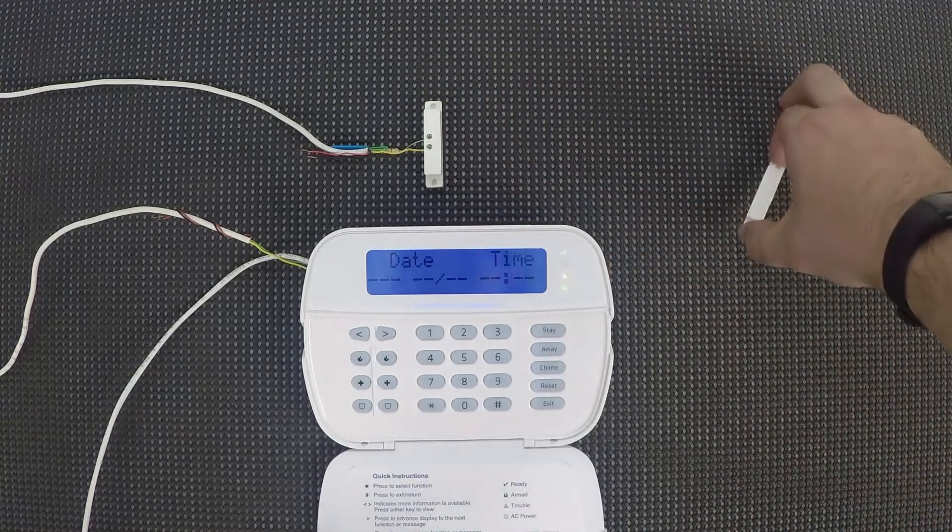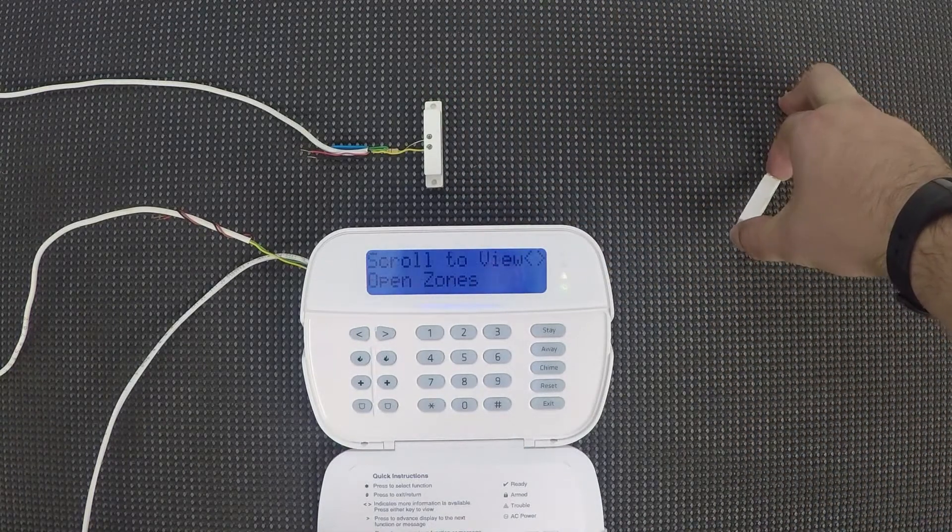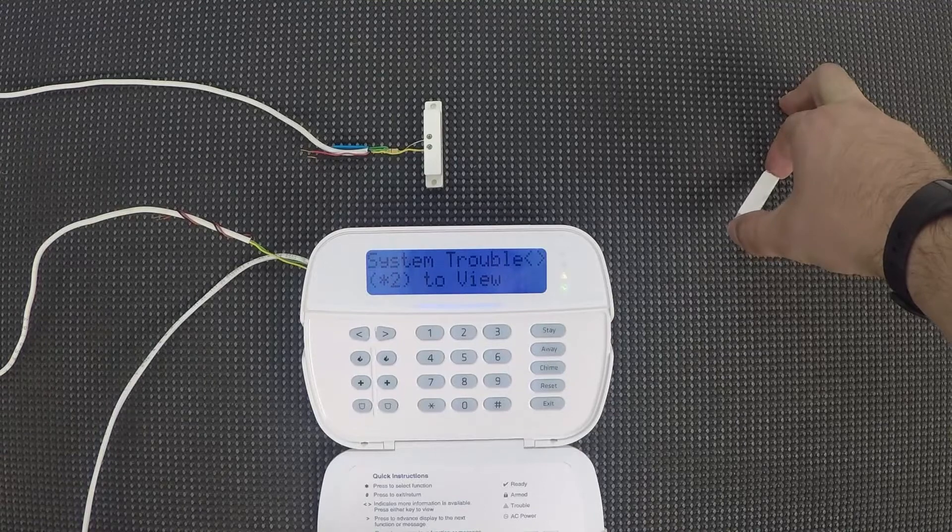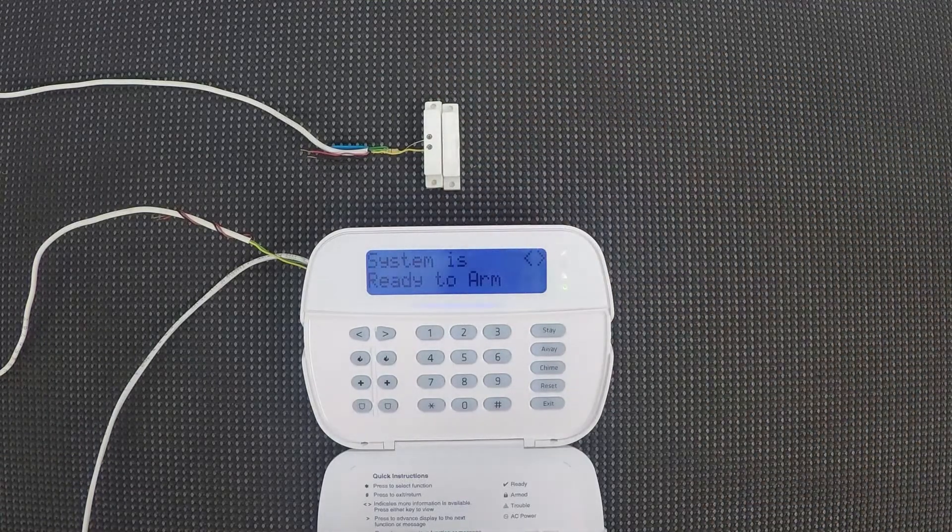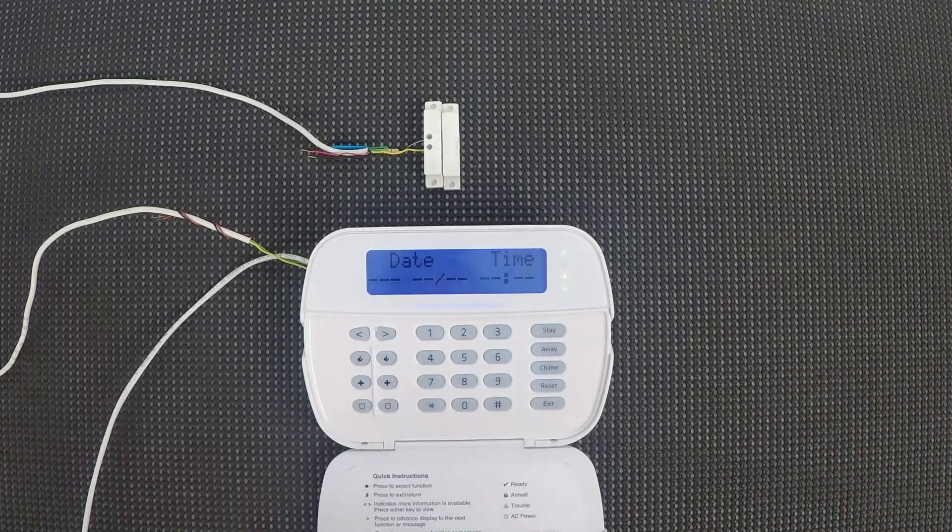So let's test it out. And so take that away, and the green check goes away. It shows zone nine is open. Put it back together, and you get the green check ready to arm. So there you have it.